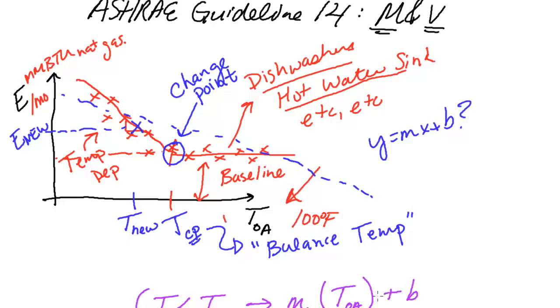And if T OA is greater than the change point, maybe we'll make one of these equals over the entire range. We'll just say that this is some energy use baseline, or we'll just call it another constant. We'll use the letter C. So any of these make sense.